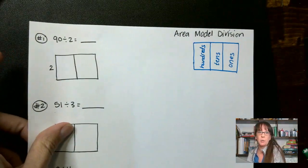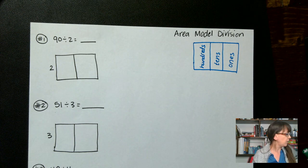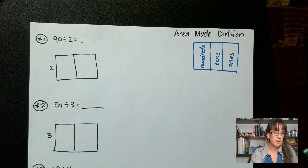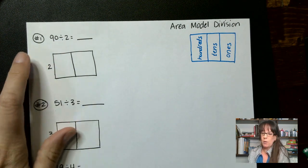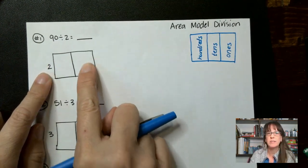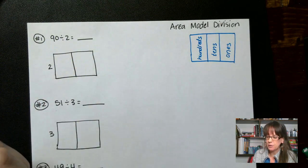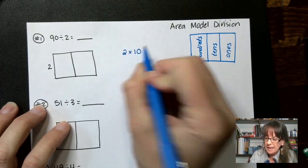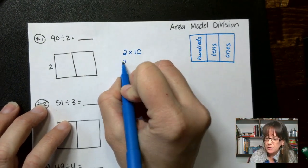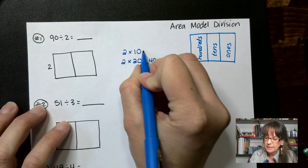Let's take a look at some of these problems. I know you've already done some of these problems on your worksheet, but I'm going to go over them again just to make sure you understand them. For our first one, we have 90 divided by 2. This is our 1s column and our 10s column. So how many 10s are there in 90 divided by 2? We have 2 times 10, 2 times 20 gives us 40, this gives us 20.